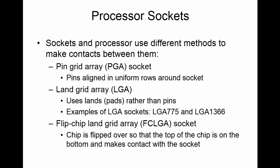Sockets and processors use different methods to make contacts between them. The Pin Grid Array, or PGA socket, has holes aligned in uniform rows around the socket to receive the pins on the bottom of the processor. Then we have the Land Grid Array, or LGA, which uses pads rather than pins. Examples you definitely want to know are the LGA-775 and the LGA-1366. With PGA sockets, those delicate pins on the processors were easily bent during installation, so know the difference between Pin Grid Array and Land Grid Array.